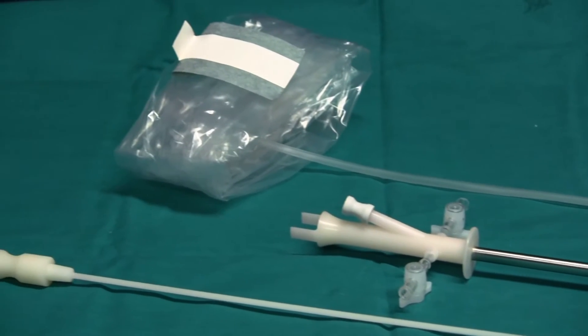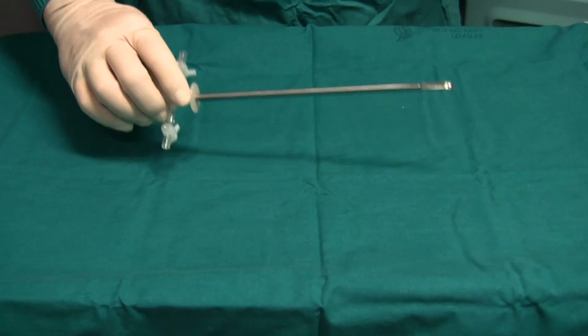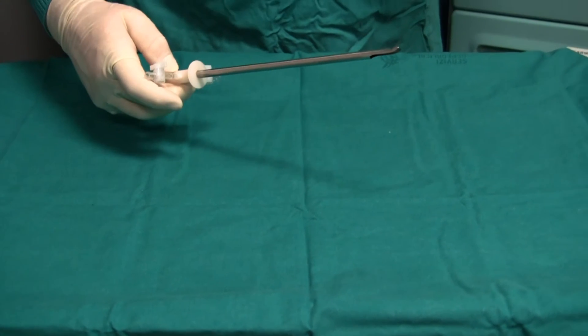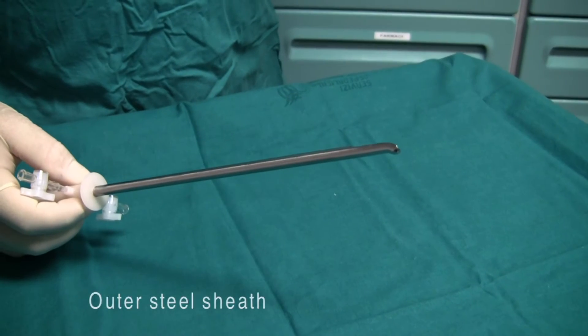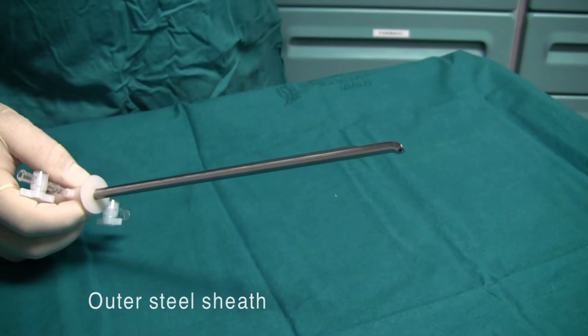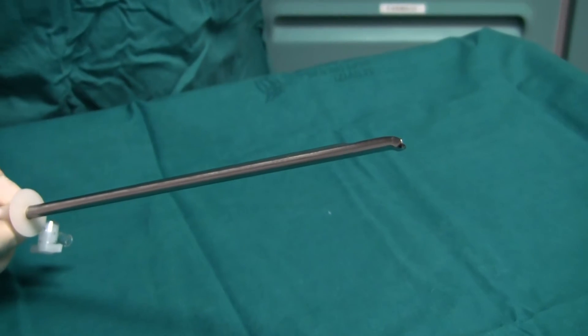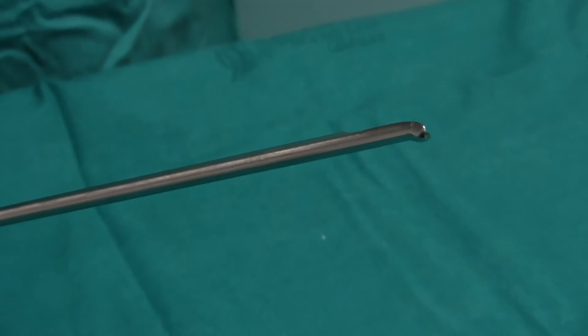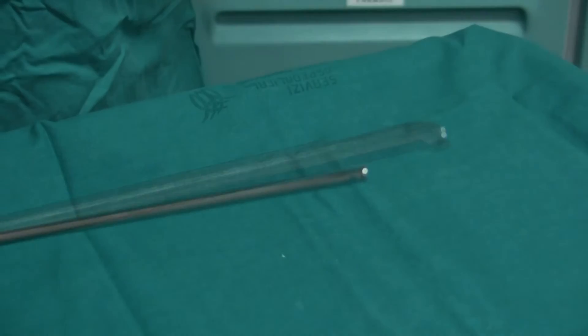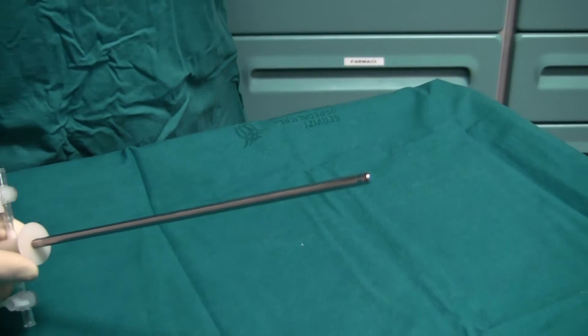The outer steel sheath is a metallic cannula that, thanks to its oval section and the rounded distal end, reduces to the minimum the traumatism on the urethral mucus and facilitates the passage of the optical system through physiological curvatures.